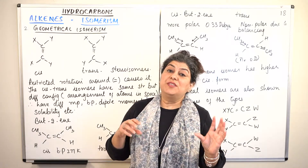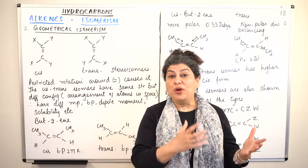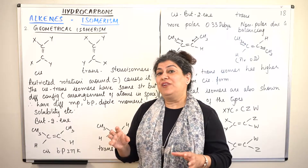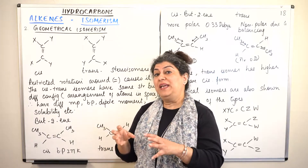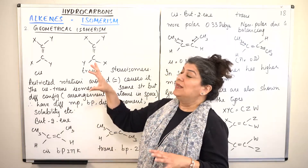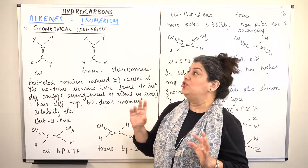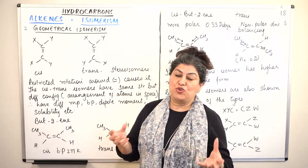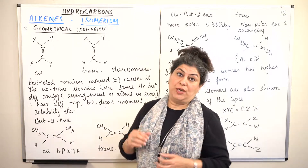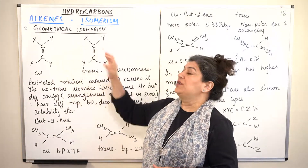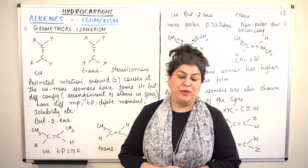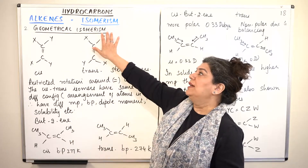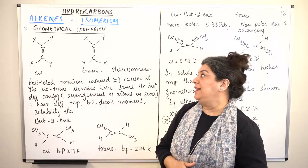If the structure is different due to a difference in the bonding, then it forms structural isomers. But if the bonding is also the same and the structures are different due to the difference in the orientation of the atoms or groups attached, we get geometrical isomerism. In this video we are going to study about geometrical isomerism in the case of alkenes.